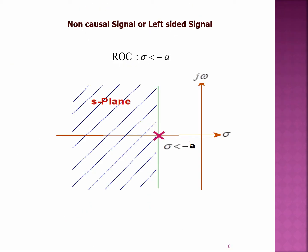The pole is at sigma equal to minus a, and the region of convergence for the left-sided signal is sigma less than minus a, so the left side of the s-plane is shaded. Notice that both the left-sided and right-sided signals give X of s equal to 1 by (s plus a). To differentiate between them, we use the region of convergence: if ROC is sigma less than minus a, it is a left-sided signal and x of t has u of minus t. If ROC is sigma greater than minus a, it is a right-sided signal and x of t has u of t.